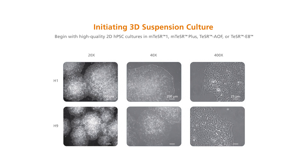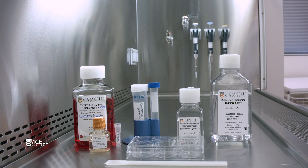To initiate 3D suspension culture, begin with high-quality 2D HPSC cultures to successfully expand cells and maintain pluripotency. HPSCs are maintained in 2D on Corning Matrigel with any of StemCell Technologies' TeSR maintenance media. Before initiating the passage from 2D into 3D suspension culture, prepare the required reagents.